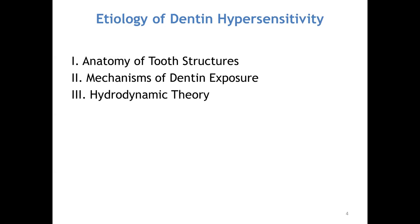Also remember the picture of where the enamel and cementum meet at the CEJ: a certain percentage meet right there, a certain percentage have the enamel overlapping the cementum a little bit, and then there's that small percentage of people where there's a gap between the enamel and cementum. Those are the patients that are going to be really hypersensitive — even with probing, their gingival margin might be where it's supposed to be with no recession, but if they're experiencing sensitivity we have to say that it's real for them.